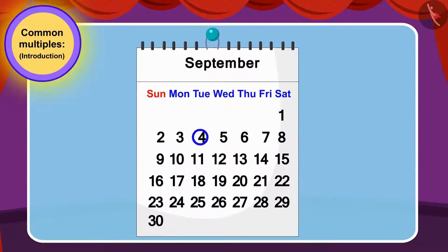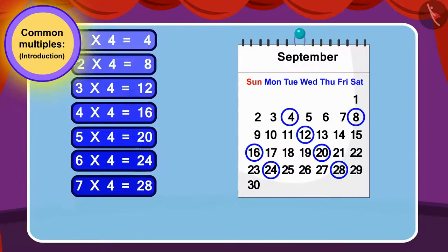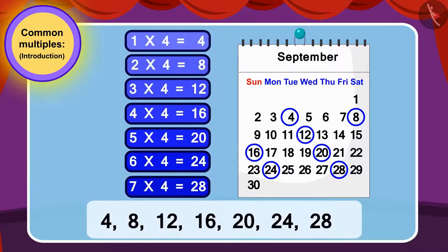Well done children, your answer is absolutely correct. We can find the answer by using tables of four. Bablu's math class will be on four, eight, twelve, sixteen, twenty, twenty-four and twenty-eight on these dates.